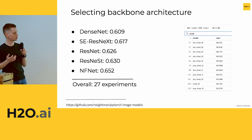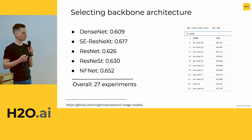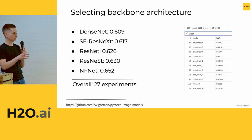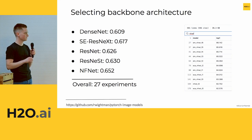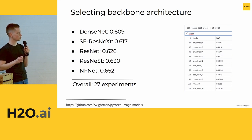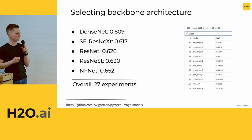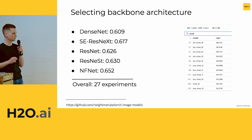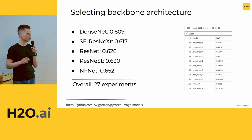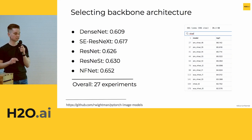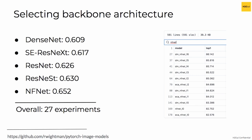Apart from the object detection architecture, we also select the backbone. The object detection architecture is just a set of layers on top of a backbone that extracts features from images. Comparing different backbone families on this dataset — DenseNets, SEResNeXt, ResNet — the best architecture was NFNet, which stands for Normalization-Free Networks. It takes the ResNet architecture and eliminates all batch normalization layers, which improves model quality and eliminates normalization effects during training. We ran 27 experiments to find the best backbone.